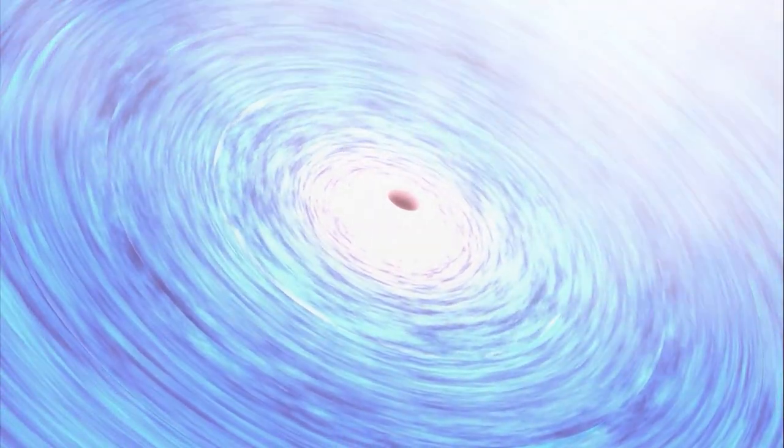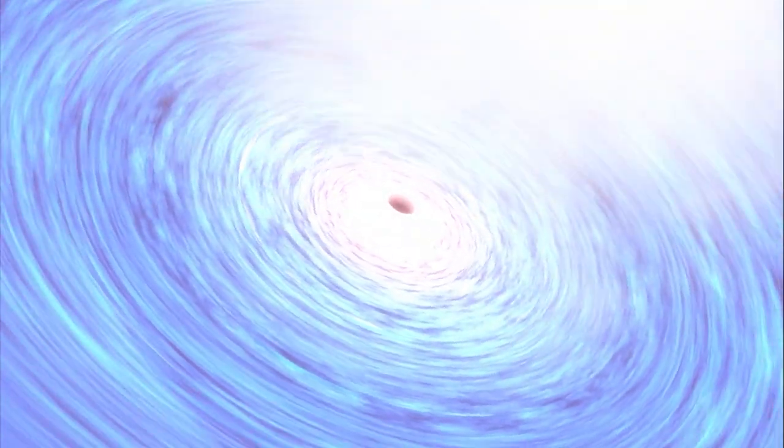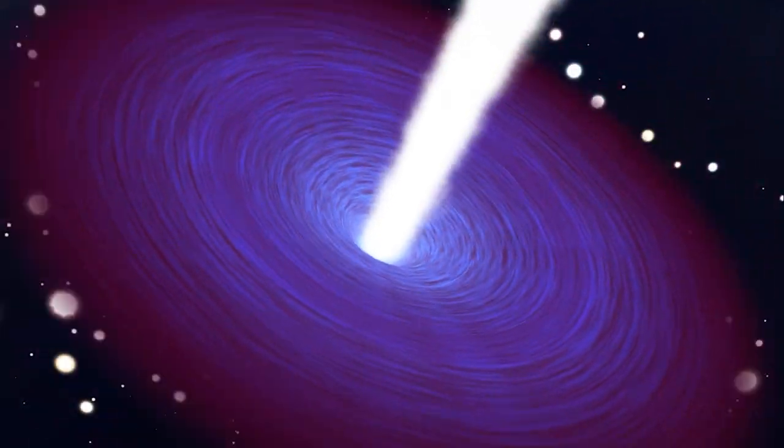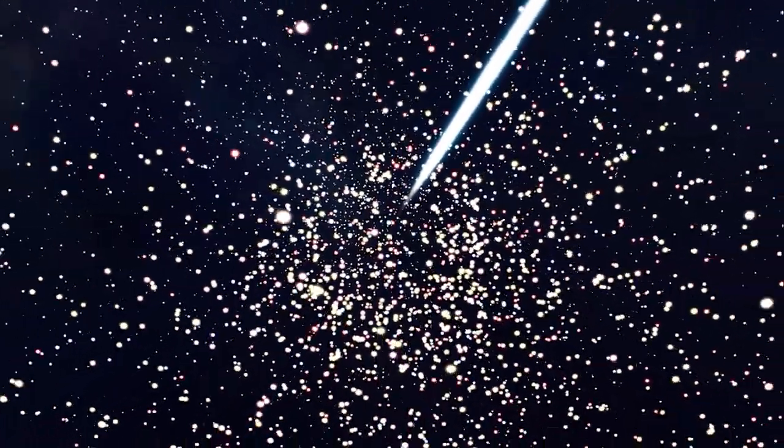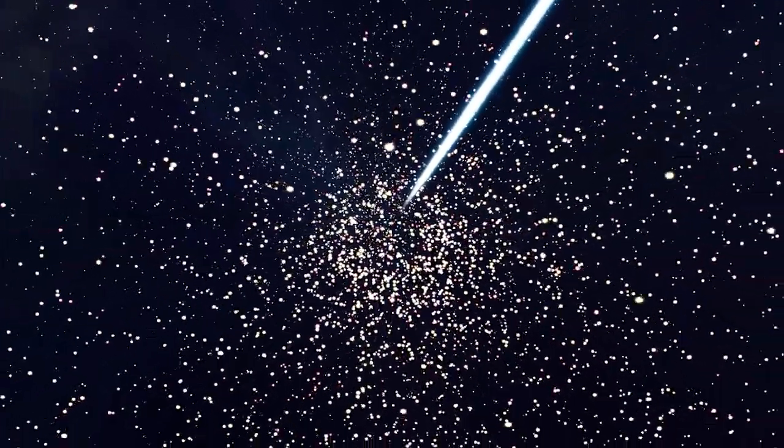The supermassive black hole at the heart of NGC7319 is six times as big as Sagittarius A*, which is located in the Milky Way's galactic core, or 24 million times more massive than our sun. But unlike Sagittarius A*, this supermassive black hole emits radiation at a phenomenal rate, comparable to the brightness of 40 billion suns all at once.